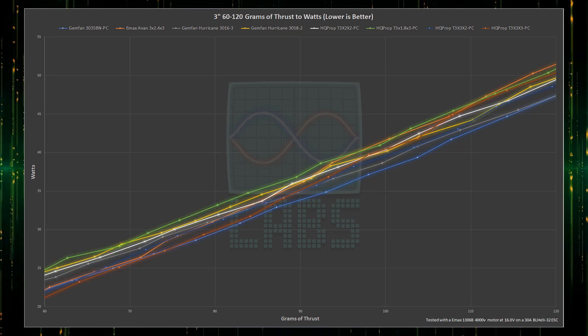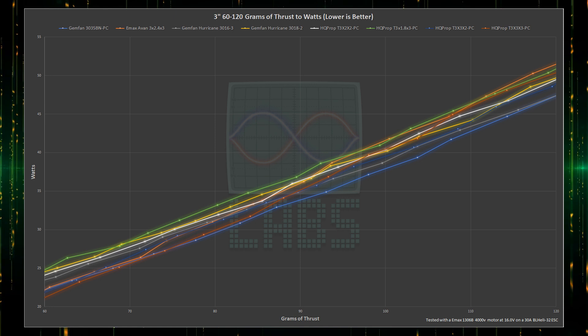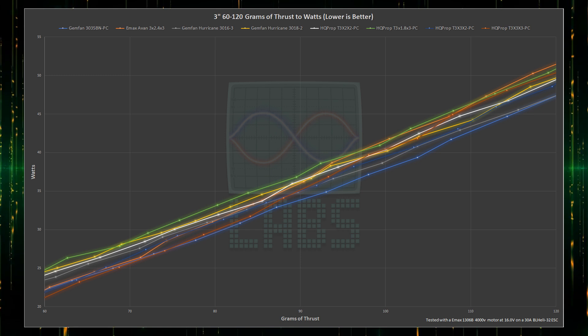The next 60 grams is where things start to get interesting as the previous leaders quickly dip in efficiency at around 80 to 100 grams of thrust with the exception of the Gemfan 3-blade 3.5-inch pitch propeller which seems to be unaffected now holding the efficiency lead. The heads-up HQ prop 3-blade 1.8-inch pitch propeller holds steady at the bottom for efficiency.